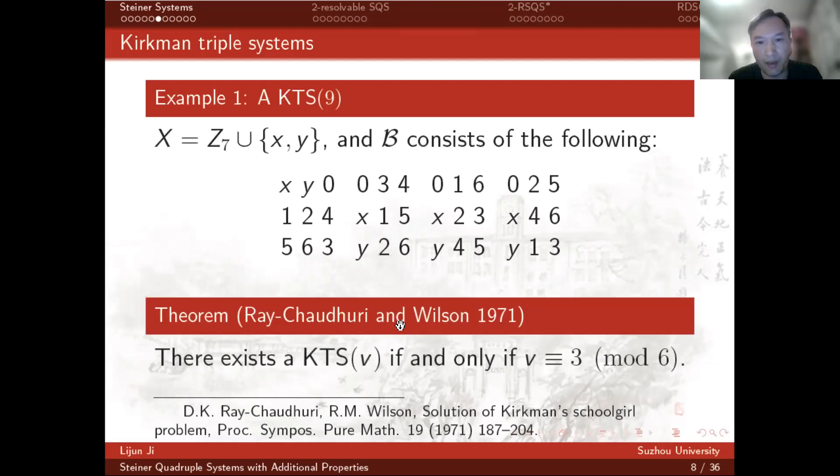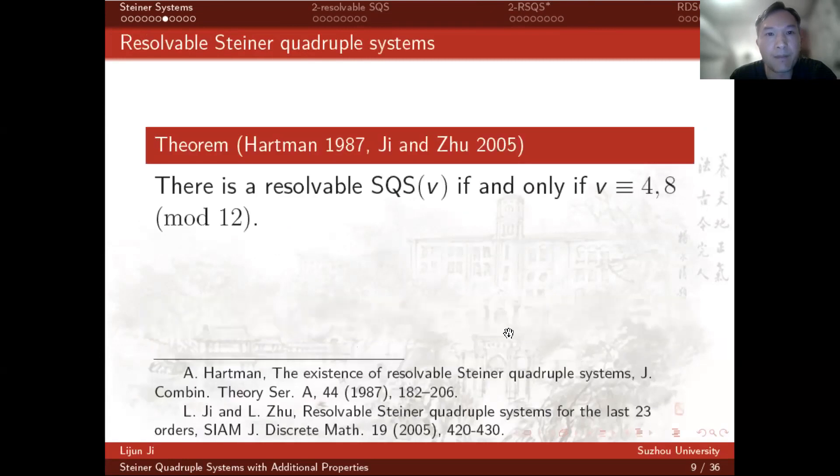Ray-Chaudhuri, Wilson proved that there is a KTS(v) if and only if v equals 3 modulo 6. It is proved that there is a resolvable KTS(v) if and only if v equals 3 modulo 6. It is proved that there is a resolvable Steiner KTS(v) if and only if v equals 4 or 8 modulo 12.